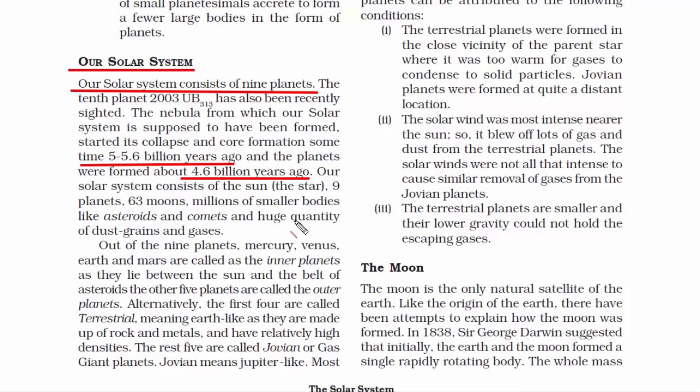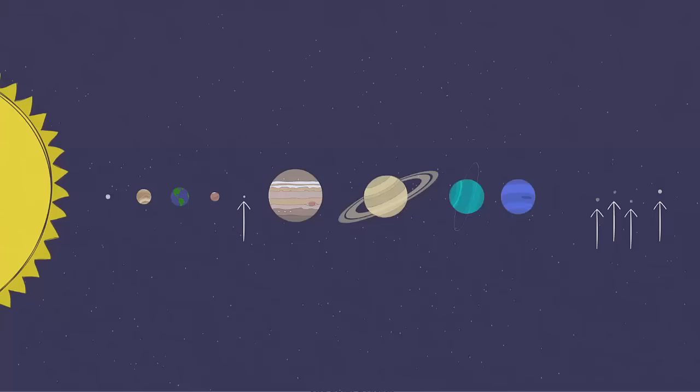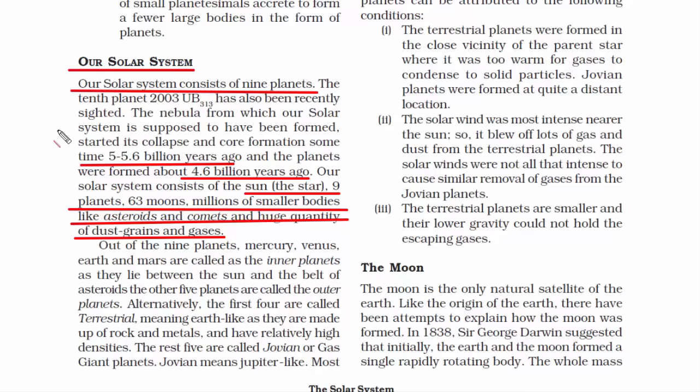Our solar system consists of the Sun — which is a star — then eight planets, then 63 moons, then millions of smaller bodies like asteroids and comets, and huge quantities of dust, grains and gases. Because of dust, grains and gases, new stars and planets continue to form, which is why there are always new discoveries by NASA about planets and stars.